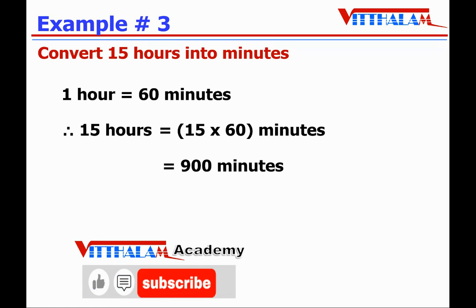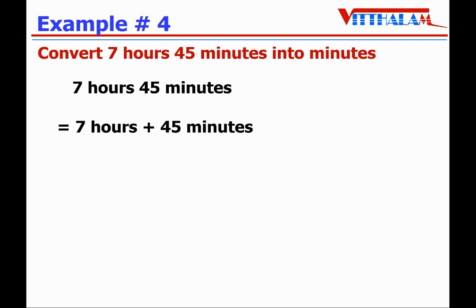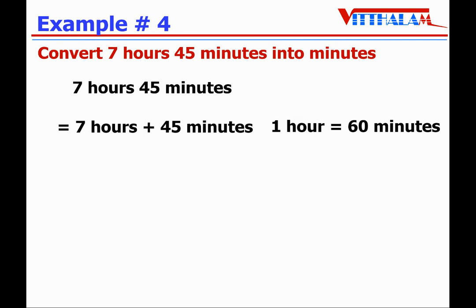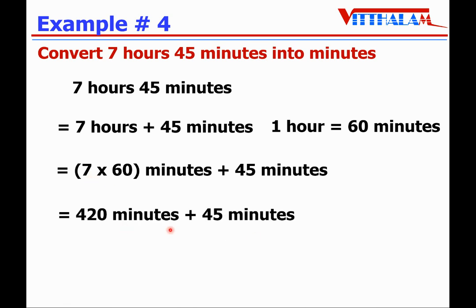Let's take another example: convert 7 hours 45 minutes into minutes. 7 hours 45 minutes is nothing but 7 hours plus 45 minutes. We know 1 hour equals 60 minutes. So 7 hours equals 7 multiplied by 60 minutes, plus the remaining 45 minutes. 7 times 60 is 420 minutes, plus 45 minutes. Since the units are the same we can add: 420 plus 45 equals 465 minutes.